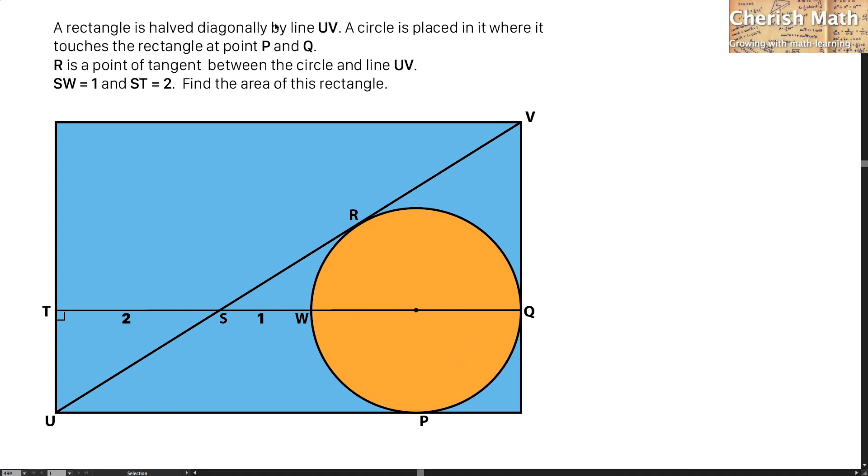Say hi from Cherish Math, and this is the question. A rectangle is halved diagonally by line UV. A circle is placed in it where it touches the rectangle at point P and Q. R is a point of tangent between the circle and line UV. SW is equal to 1 and ST is equal to 2. Find the area of this rectangle.